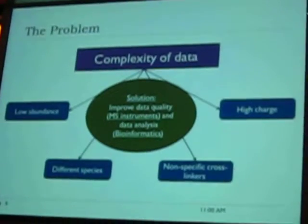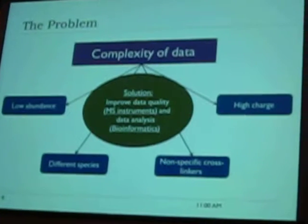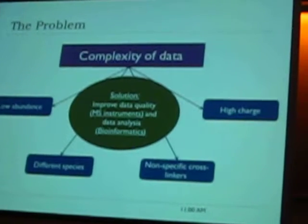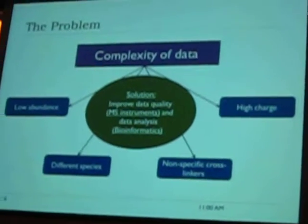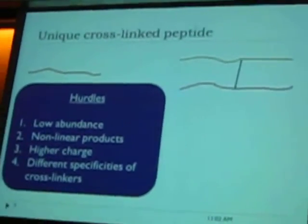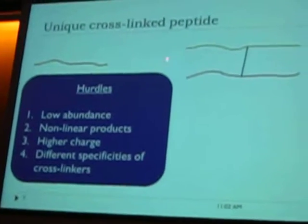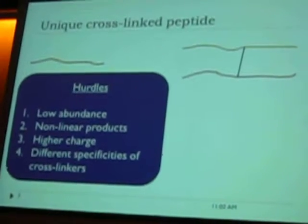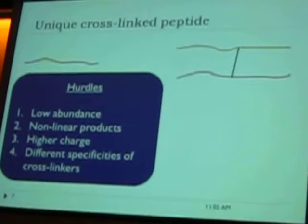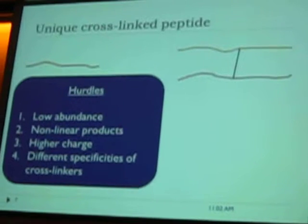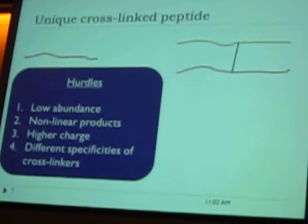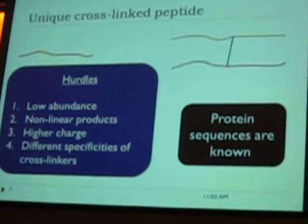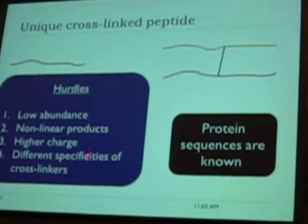What is the solution? First, improve data quality — and MS instruments are doing a really good job at that. Second, improve the data analysis, which is what I am working on. Why is the cross-link peptide unique? It has lower abundance, non-linear products, high charge, and different specificities of cross-linkers. But not everything is bad with cross-link peptides — when we are doing the cross-linking experiment, we know which protein we are working on. The sequences of the protein are known to us, and we can use that fact to our advantage in deciphering the spectra for the cross-link peptide.